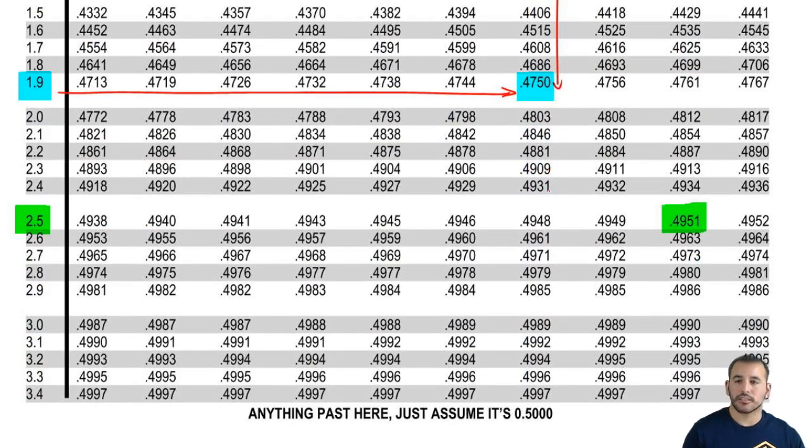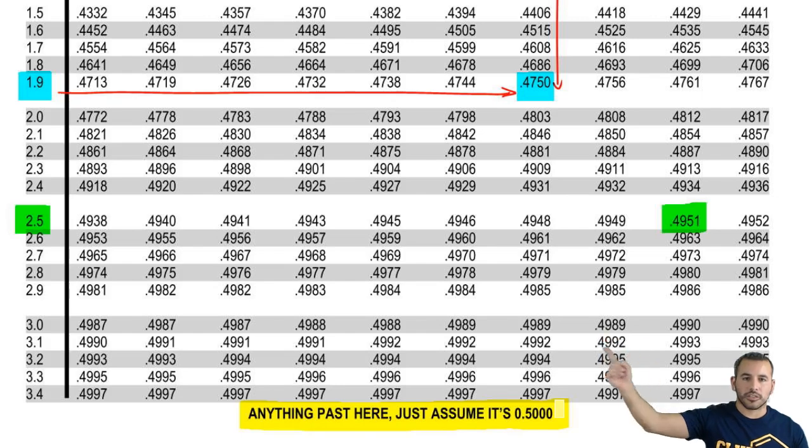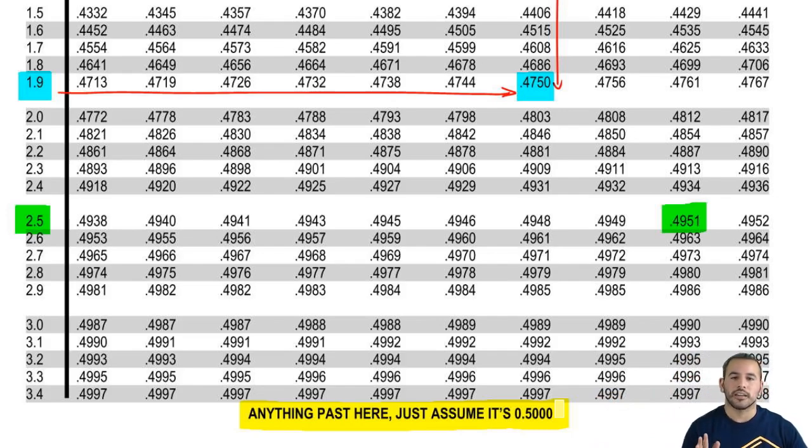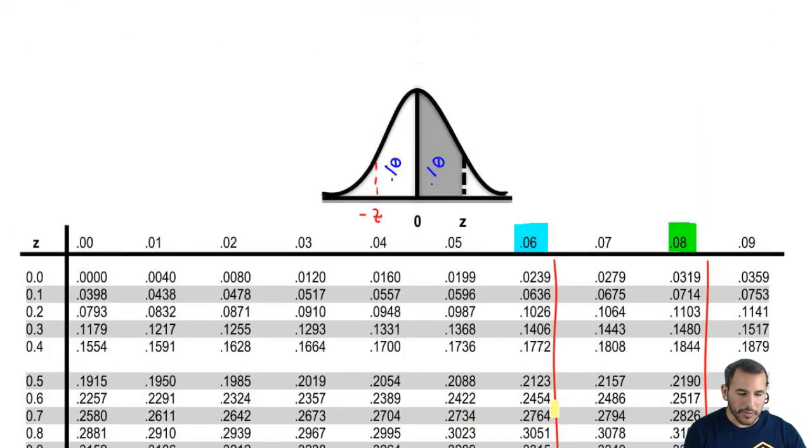3.6. The table actually stops at 3.49. What do we do from there? I wrote this warning. Anything past here, just assume 0.5. You see how the numbers are getting closer and closer to 0.5? As you move further and further away, the little areas get so small and so itty bitty that they basically don't increase from there on. At a certain point, we just assume that it's far enough out that it's just 0.5.